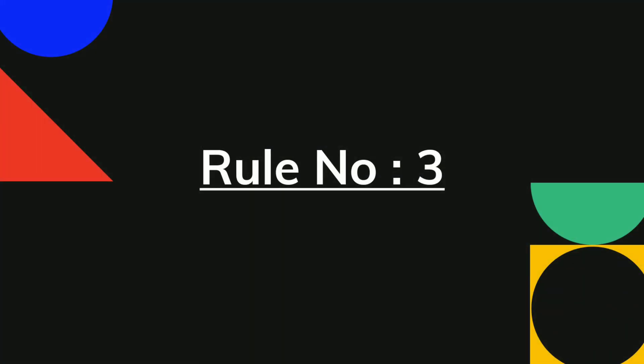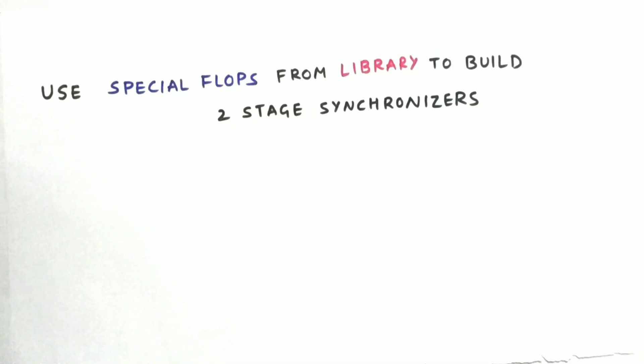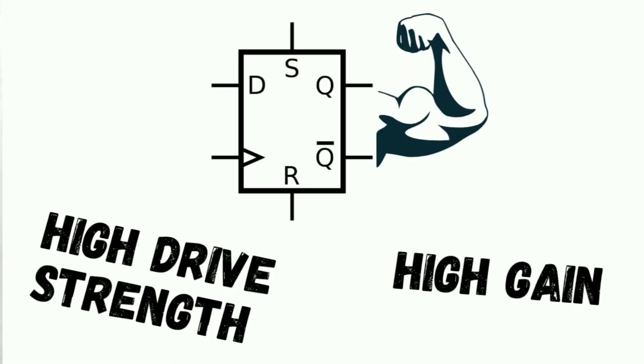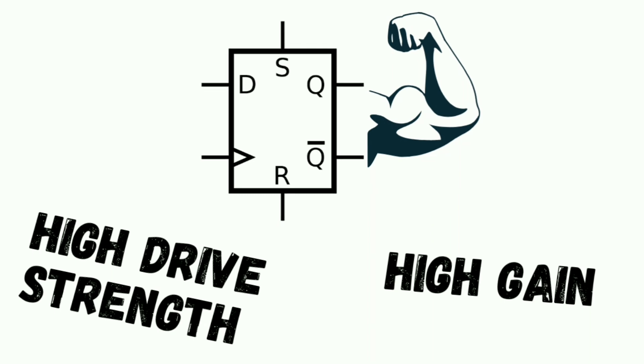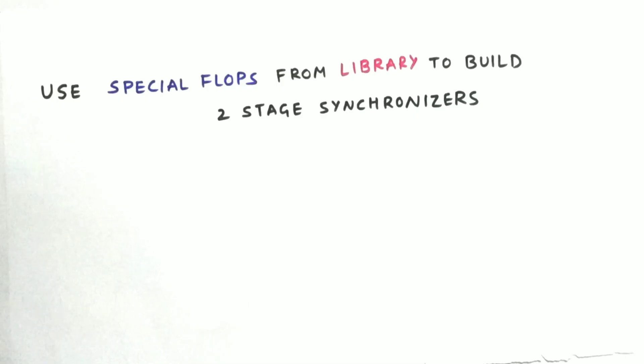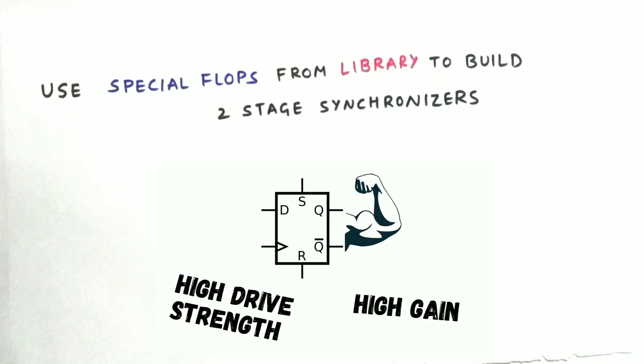So now let's go for the third and the final rule. This rule might sound silly but we must use special flops in the library to build a two-stage synchronizer. So these flops have higher drive strength and high gain which will help us to resolve the output to settle down quickly compared to the regular flop because of the high gain. So this will reduce the probability of metastability occurrence. Okay, there is a small chance that metastability can be reduced by using high gain flops compared to the normal flops.